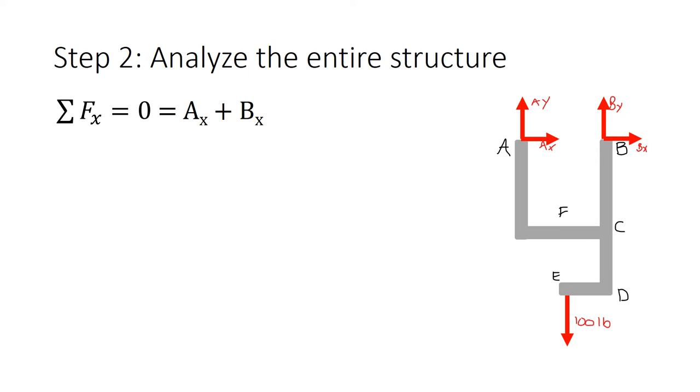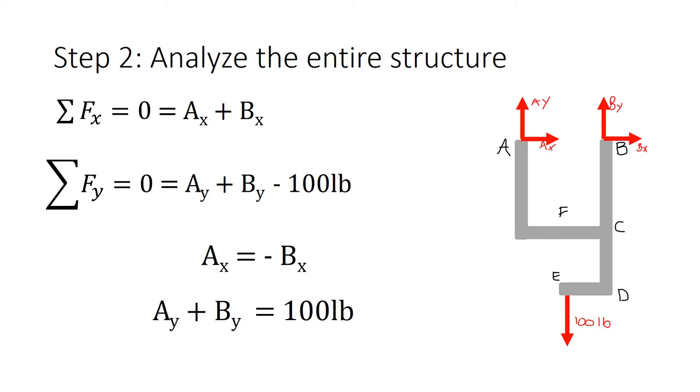Starting with sum of forces in x, we have Ax plus Bx equals zero. Sum of forces in y is Ay plus By minus 100 pounds equals zero. If we rearrange these equations, next we need to pick a point and take a moment about it, because right now all we have are unknowns.